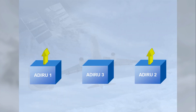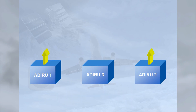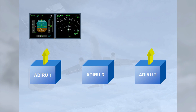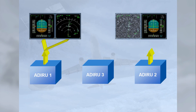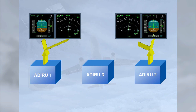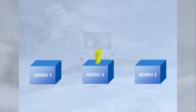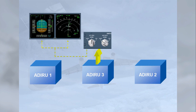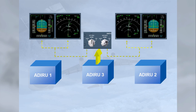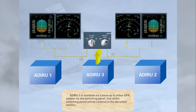Independent data is supplied by each ADIRU. In the EFIS system, ADIRU 1 supplies the captain's EFIS, and ADIRU 2 supplies the first officer's EFIS. ADIRU 3 is available as a backup to either EFIS system via the switching panel. Use of the switching panel will be covered in the abnormal section.